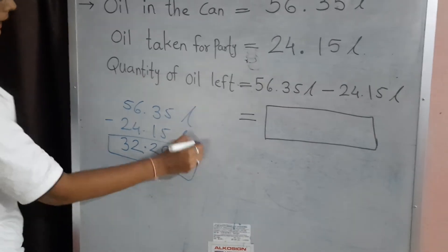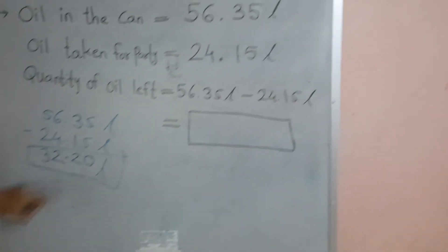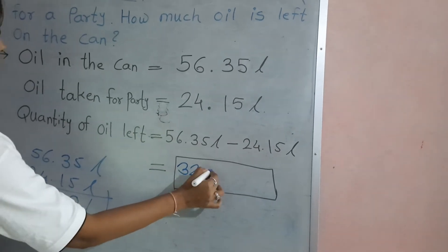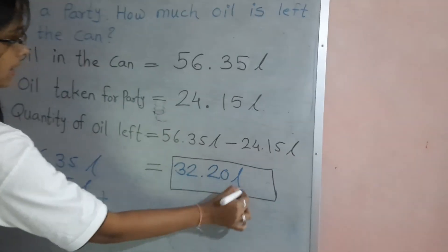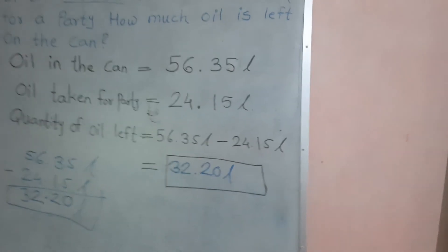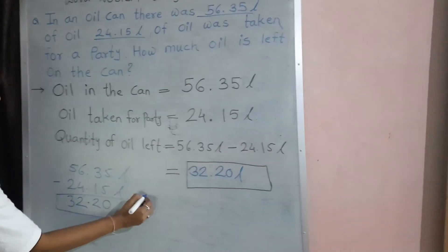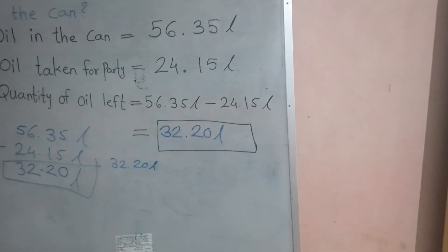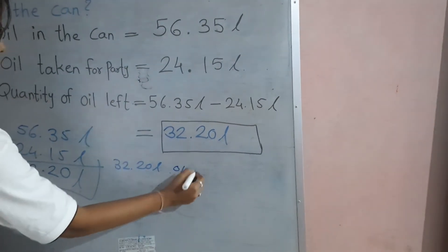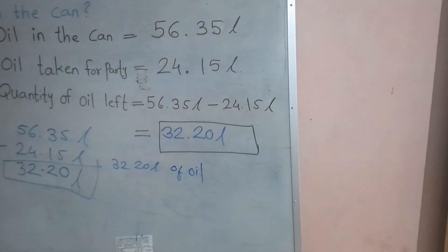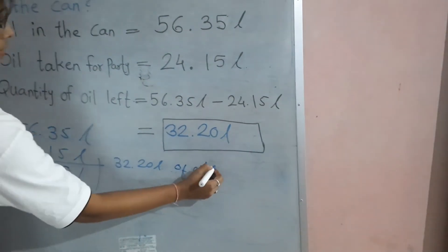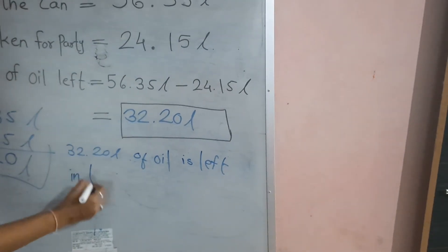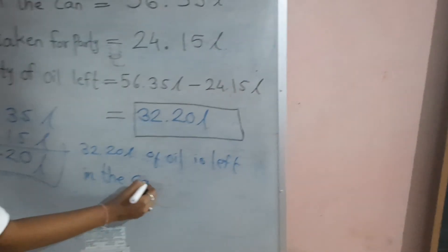Means 32.20 litre. So, we just write here 32.20 litre. So, we can say that 32.20 litre of oil is left in the can.